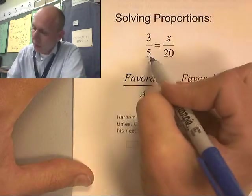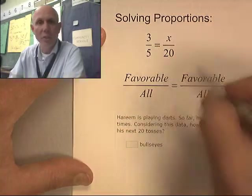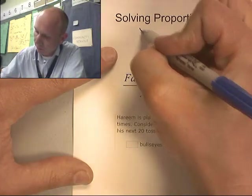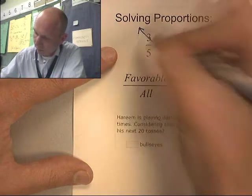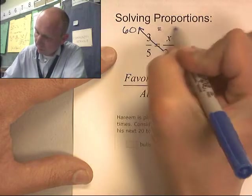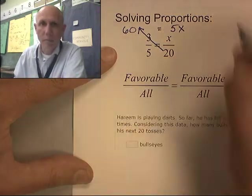Let's see if this looks familiar. 3 over 5 is the same thing as x over 20. I know some of you can do this in your head, but I'm going to review this method right here. So 60 equals 5x. Remember that?